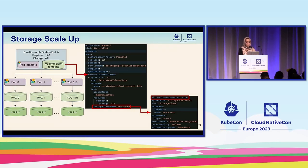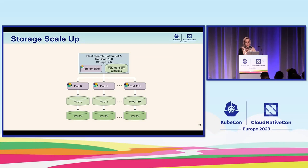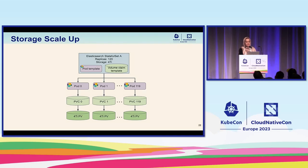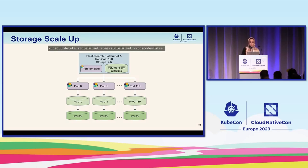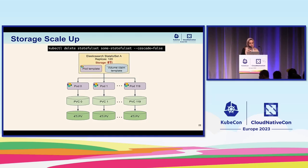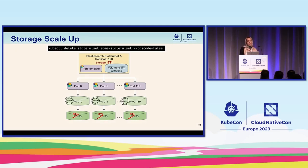Setting allowVolumeExpansion to true is a requirement, but you need additional steps to make it work. For scaling up, the custom controller again needs to delete the StatefulSet object with the cascade flag set to false, then recreates it with the new size. There is a key difference here: we no longer need to delete the volume claims. The controller just needs to update the volume claim objects — changing storage from four to eight tebibytes, for example — and the rest is taken care of by Kubernetes. Kubernetes will automatically expand every disk without downtime.